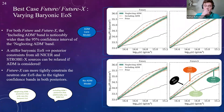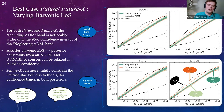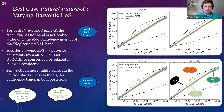This tells us that posterior constraints from current and future NICER sources and future STROBE-X sources can be relaxed if ADM is considered in the equation-of-state analysis. Future X provides tighter constraints due to tighter confidence bands. Quantitatively, at log energy density 14.71, the including-ADM band is approximately 20.67% and 27.66% wider for the ADM core and no-ADM models respectively for the future scenario; for future X, we find 7.48% and 28.16% wider for ADM core and no-ADM models.